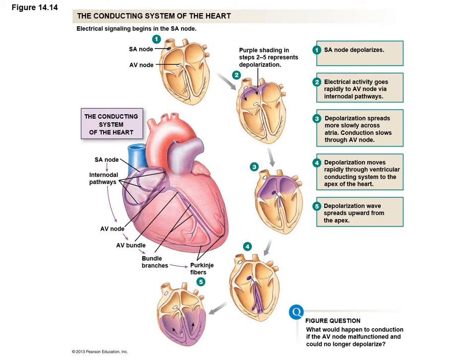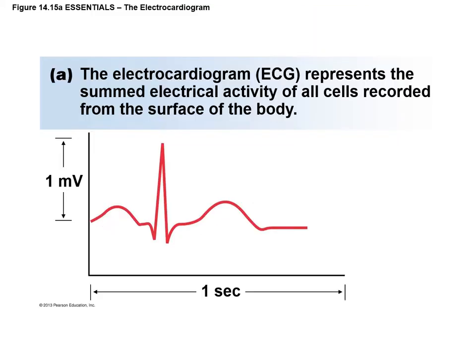All of these events of the heart are measured electrically in a diagram called the electrocardiogram. The ECG — sometimes referred to as EKG — represents the summed electrical activity of all cells of the heart from the body surface. It's looking at the total electrical activity of the heart in its entirety: not just the pacemaker, not just the myocardial cell, but the whole heart. Each one of these waves represents different events in the heart electrically.